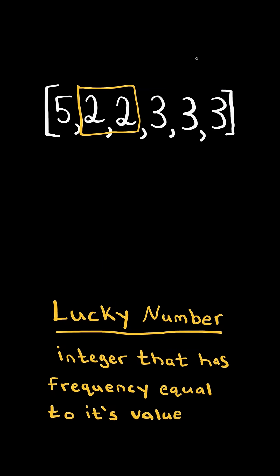For example, 2 is a lucky number because the frequency it appears in the array is equal to its value. And same for 3. Return the largest lucky number.